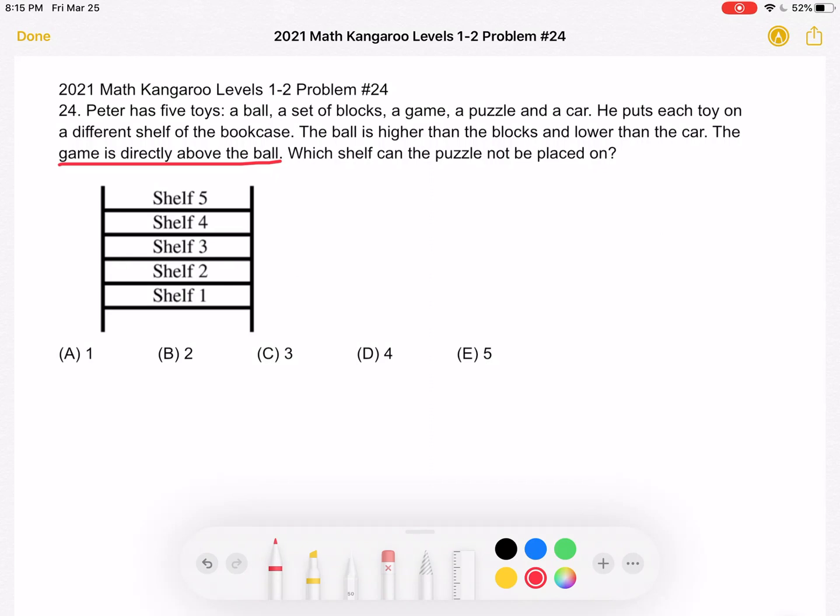So if we picture our shelves as drawn here in the drawing, if we have the game, we know that the game is directly above the ball. So there's no shelves in between. They're directly on top of each other.